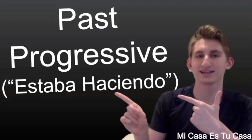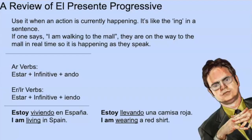Hey guys, so today I'm going to be doing a quick review of the past progressive tense in Spanish, which is with the -ing ending, just in the past tense, like estaba haciendo. I'm going to start with a quick review of the present progressive, which is when an action is currently going on — like -ing in English. So 'I'm walking to the mall' means you are currently on the way to the mall as you say it.